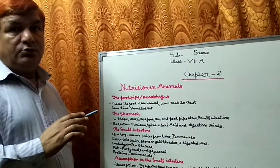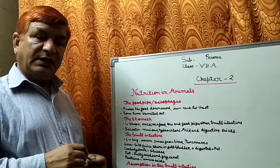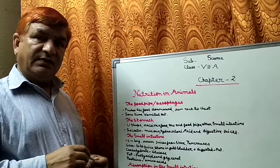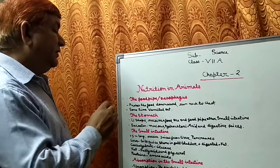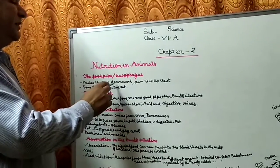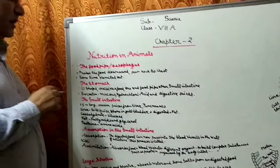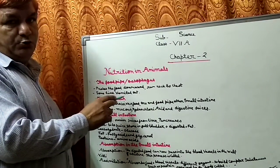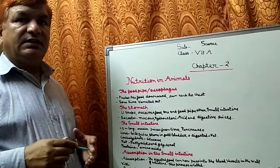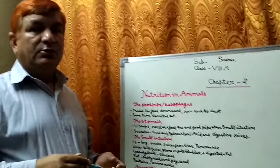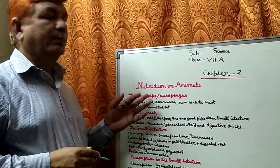Sometimes we eat spoiled food, damaged food, or unwanted food. In such a situation, the movement of food becomes upward instead of downward, and this process is called vomiting out - ulti karna. Yadhi koi avanchhit padaart khaa jaate hai ya kharaab padaart khaa jaate hai, toh hume vomiting aa jaati hai - through the food pipe.